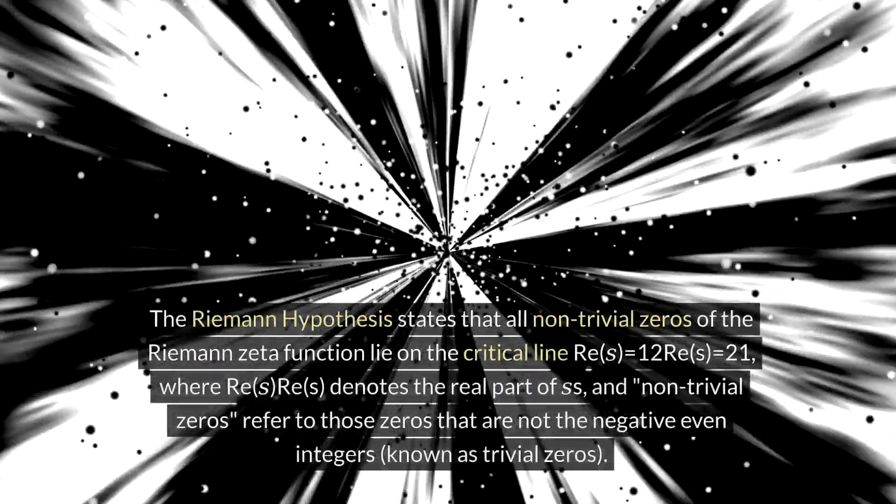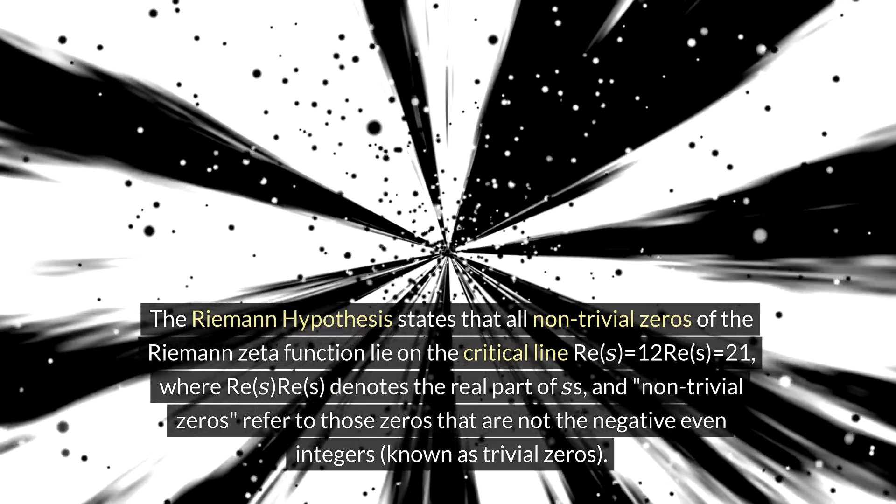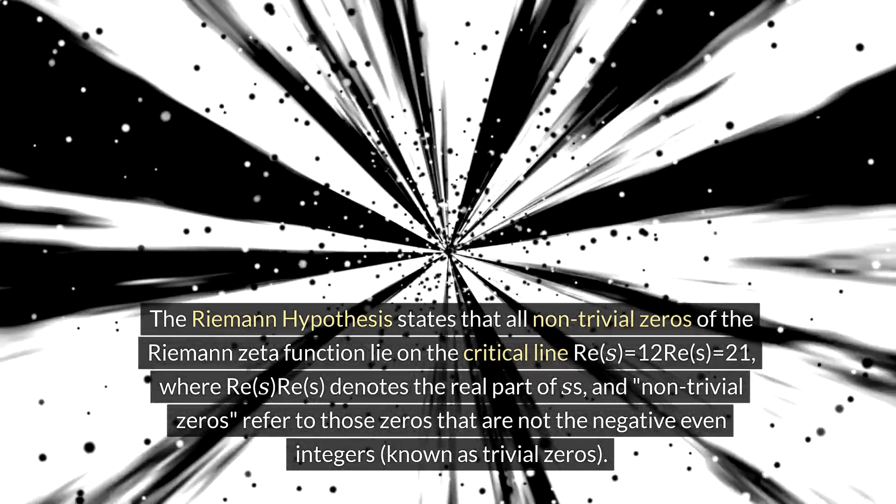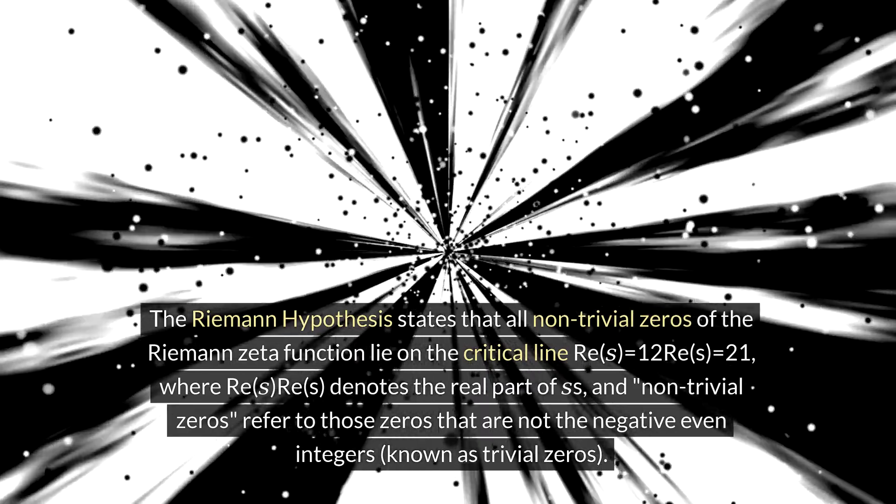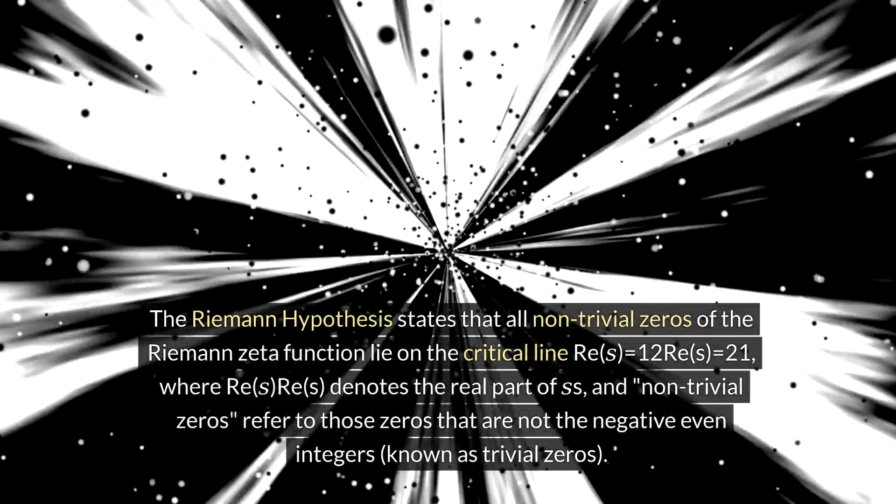The Riemann hypothesis states that all non-trivial zeros of the Riemann zeta function lie on the critical line Re(s) = 1/2, where Re(s) denotes the real part of s, and non-trivial zeros refer to those zeros that are not the negative even integers, known as trivial zeros.